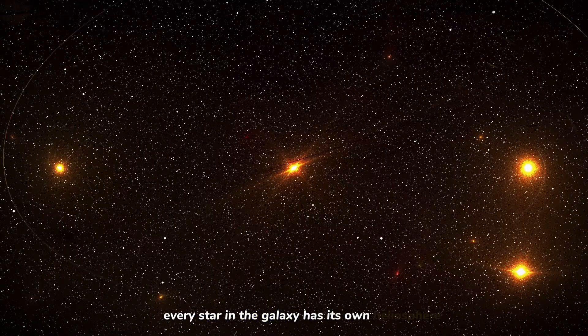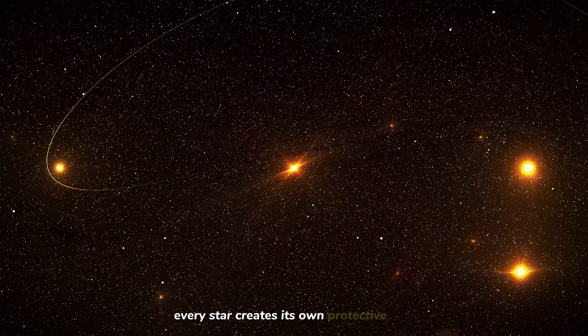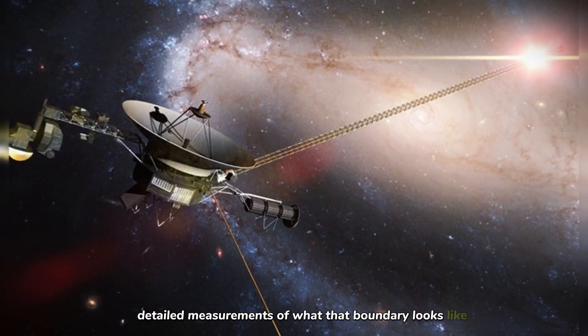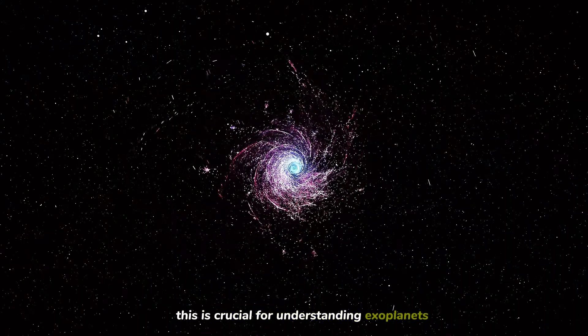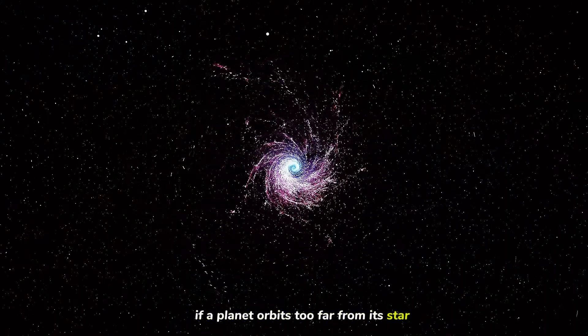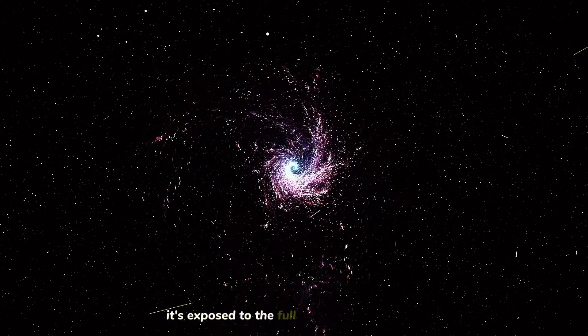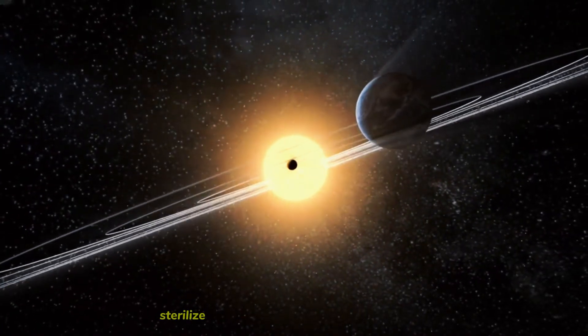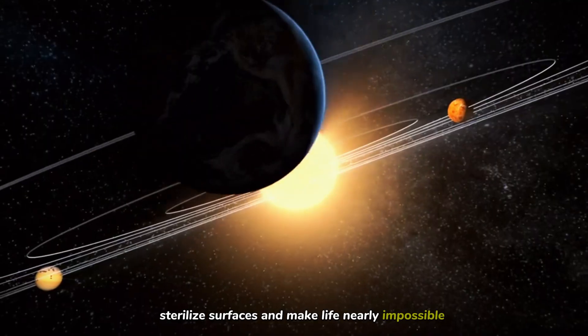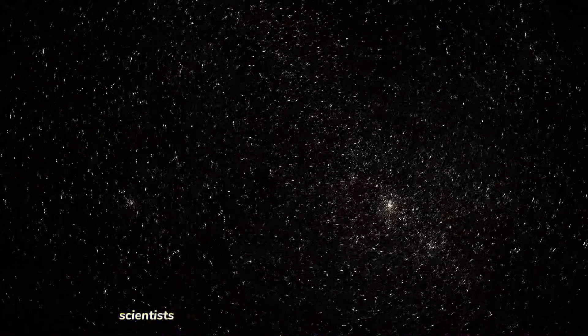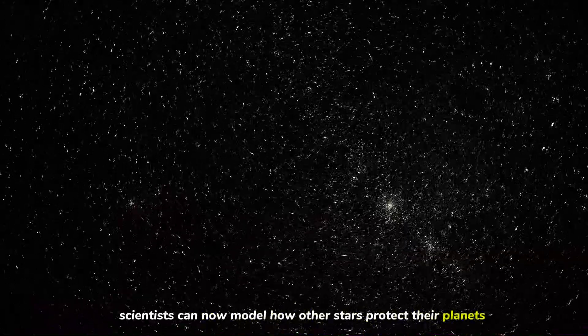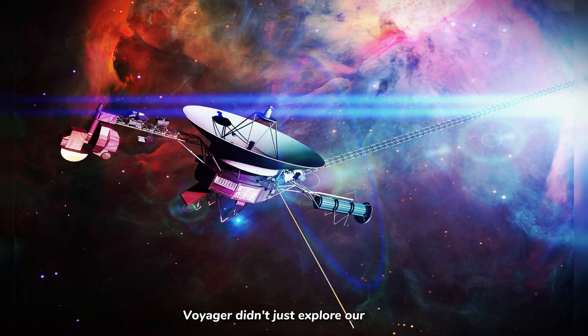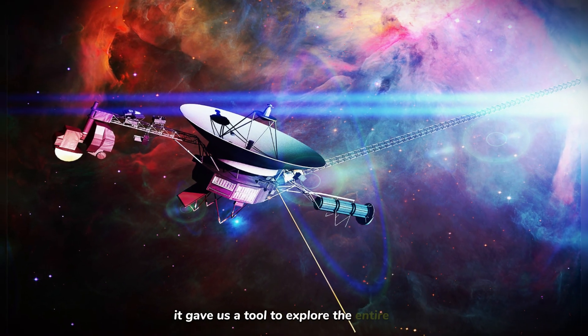But the implications go beyond our solar system. Every star in the galaxy has its own heliosphere. Every star creates its own protective bubble. Voyager just gave us the first detailed measurements of what that boundary looks like. This is crucial for understanding exoplanets. If a planet orbits too far from its star, outside the astrosphere, it's exposed to the full fury of cosmic radiation. That radiation can strip away atmospheres, sterilize surfaces, and make life nearly impossible. By studying our heliopause, scientists can now model how other stars protect their planets. This helps narrow the search for habitable worlds. Voyager didn't just explore our backyard. It gave us a tool to explore the entire galaxy.